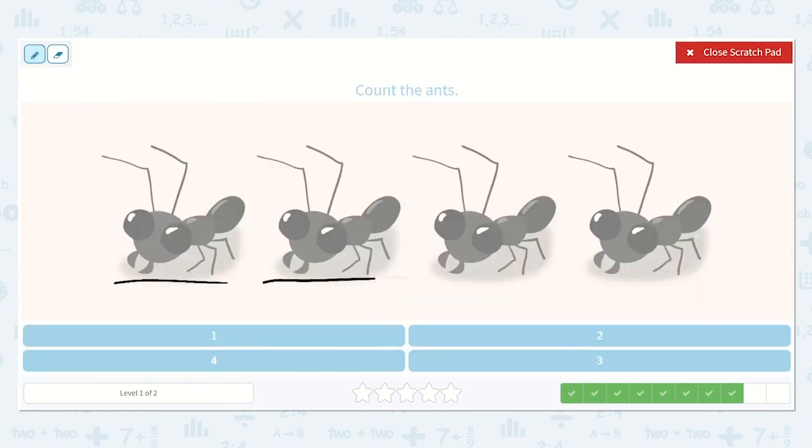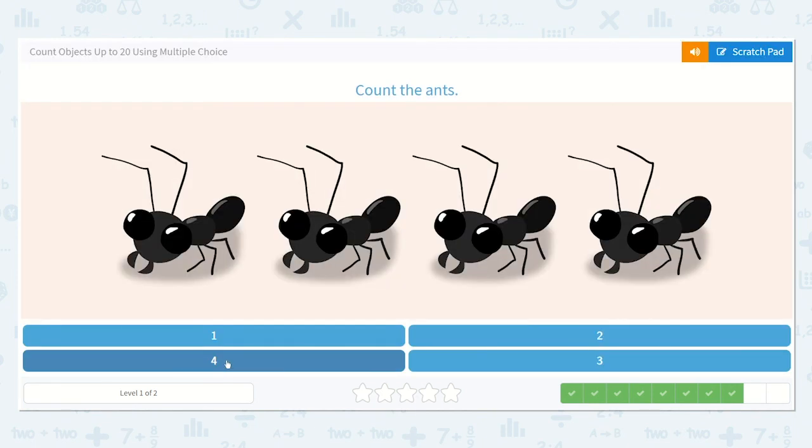One, two, three, four. I see four ants. I know a four looks like this. Do you see the four down below? Yes, right here. Let's choose the four.